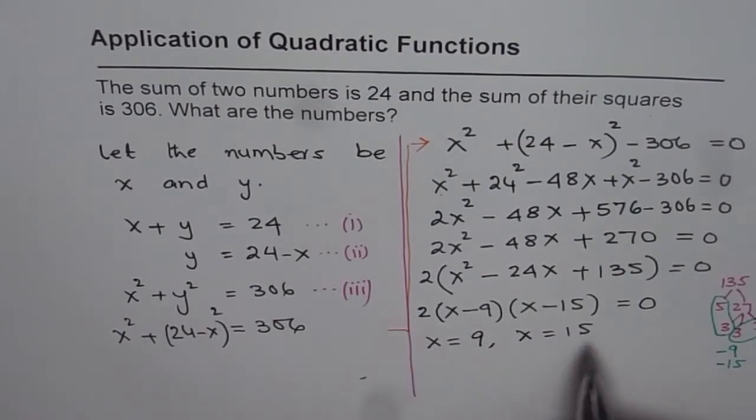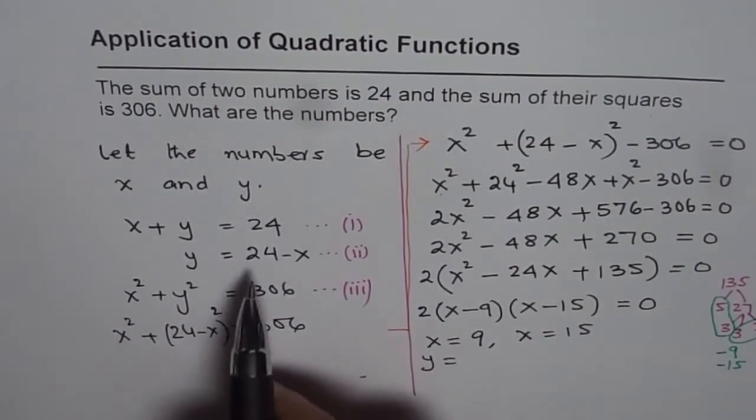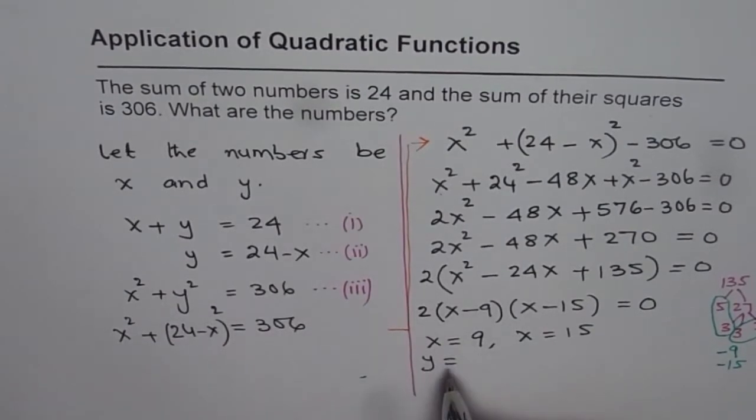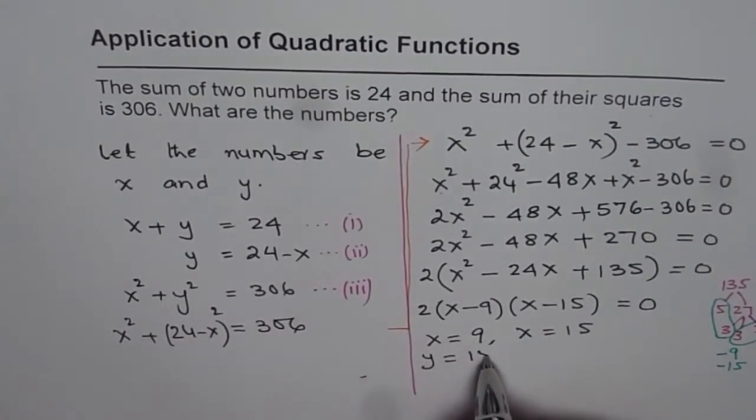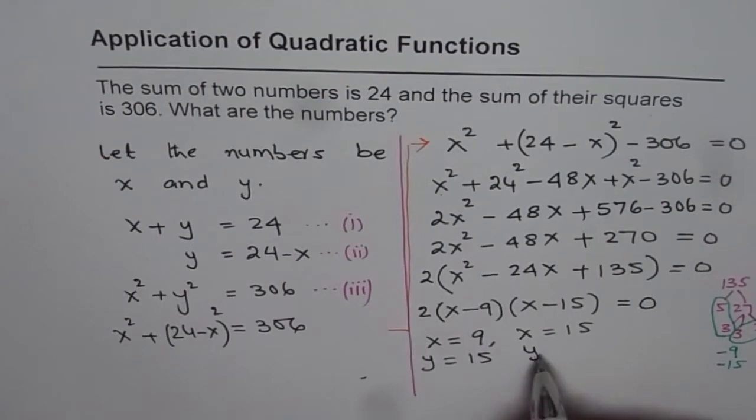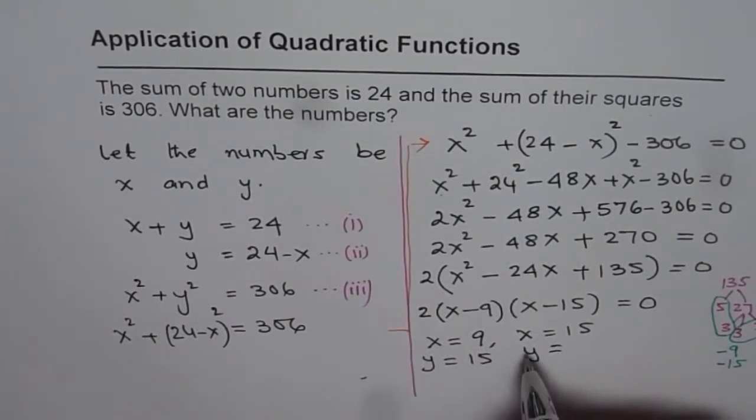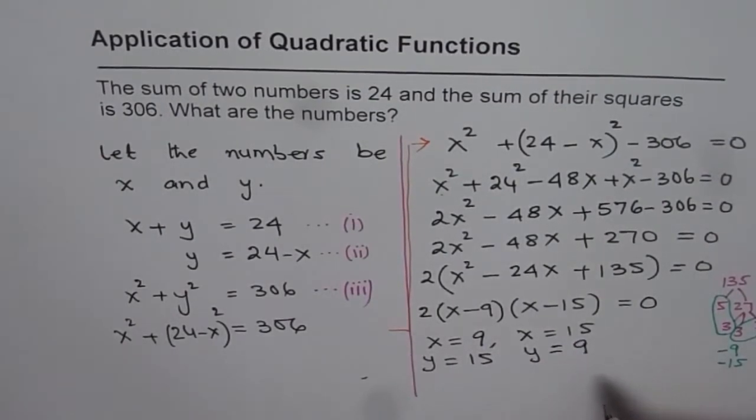Now what is the y value? y value is equal to 24 minus x. Well, 24 minus 9 will be 15. In this case 15 if you take away from 24 you should get 9. So in any case you have solution here.